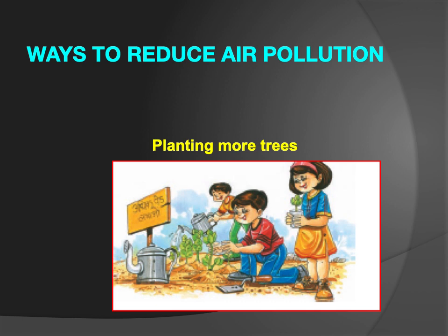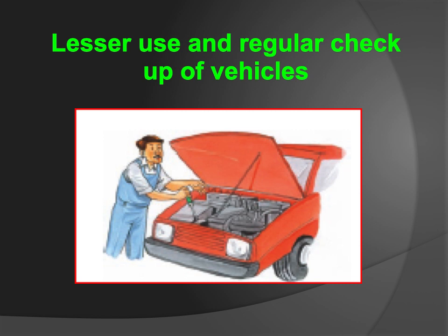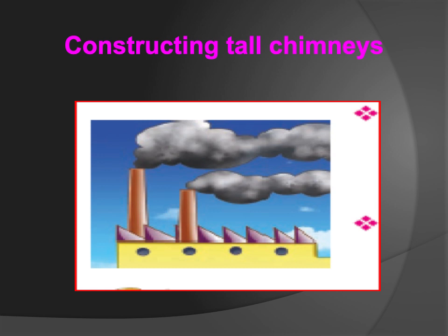Let's learn some ways to reduce air pollution. Planting more trees will help in reducing air pollution, as the carbon dioxide in the atmosphere will be taken by the trees and oxygen will be provided to us. The second important way is lesser use and regular checkup of vehicles. We can use CNG vehicles and also do carpooling to reduce air pollution. Constructing tall chimneys will also reduce air pollution as the pollution will divert to other areas and the concentration in one area will be less.